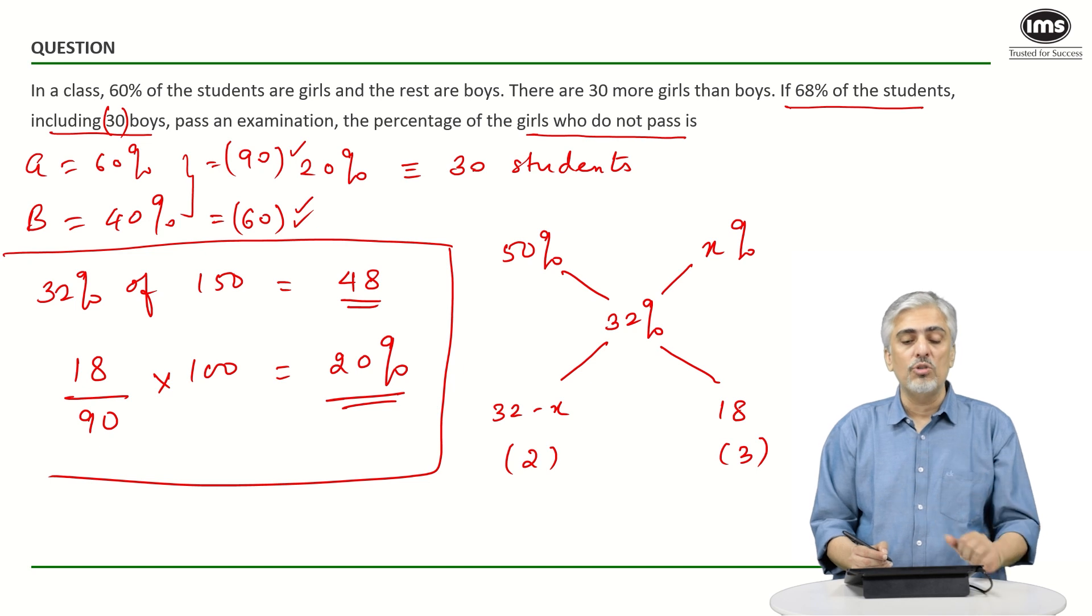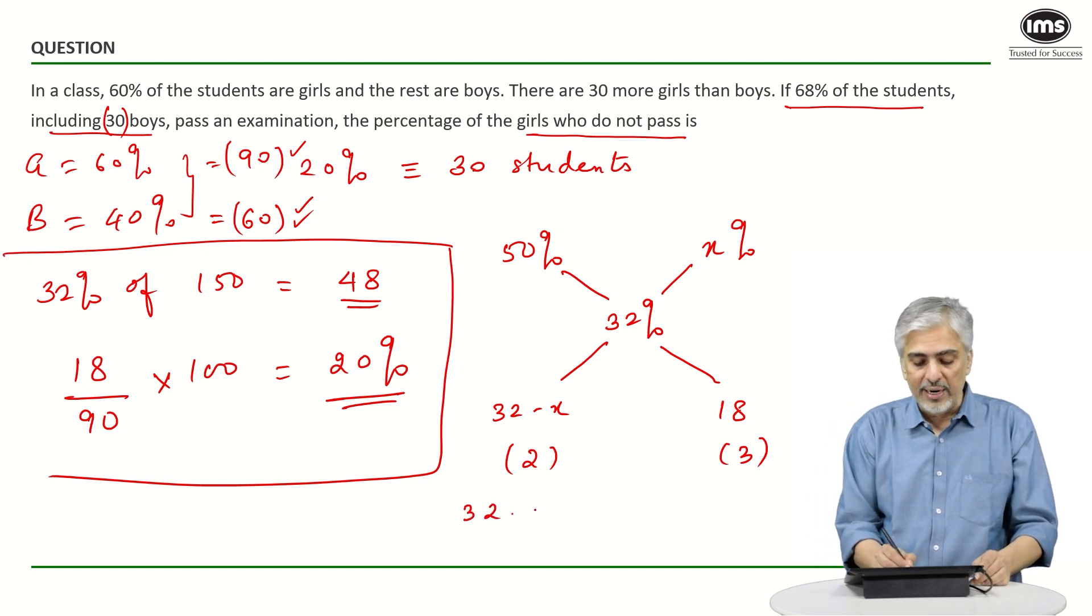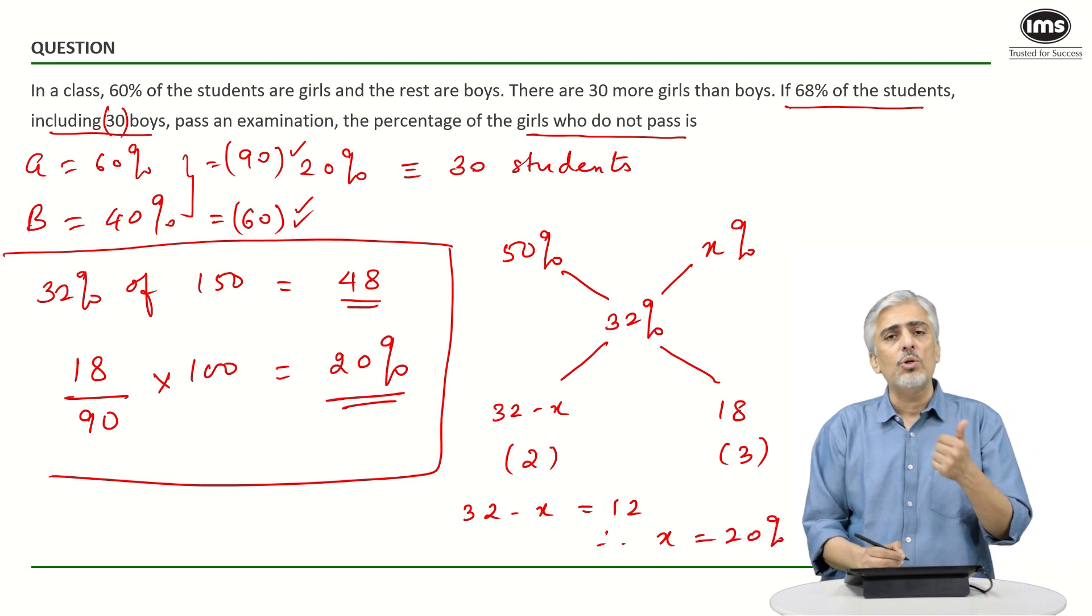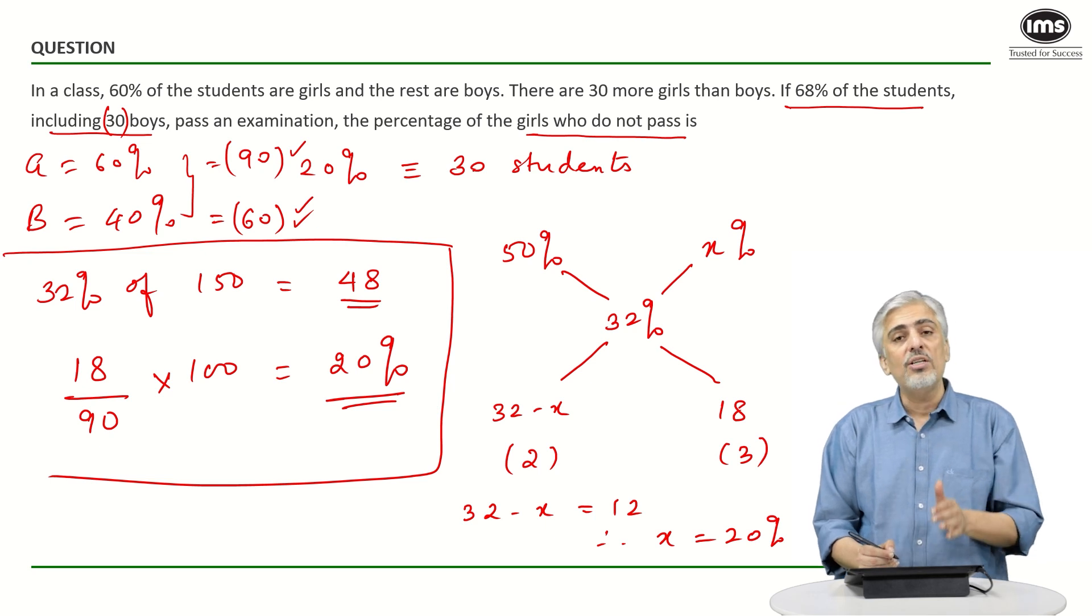3 parts is 18, so 2 parts will be 12. So 32 minus x equals 12, and x is 20%. For those who want to use allegation—not that it was really helping much because the calculations were easy—you could have used allegation as a second approach.